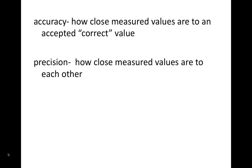Accuracy is how close measured values are to an accepted or correct value, while precision is how close measured values are to each other.